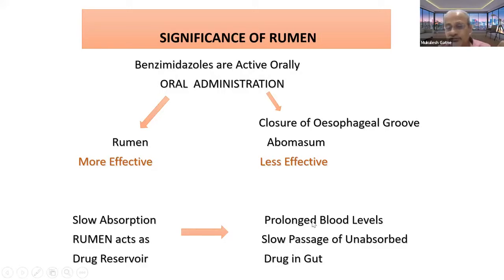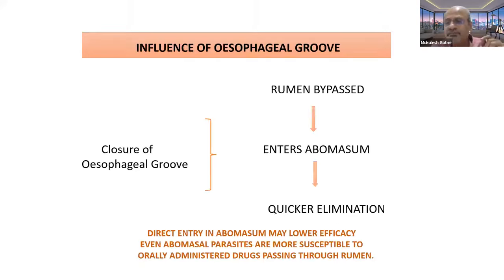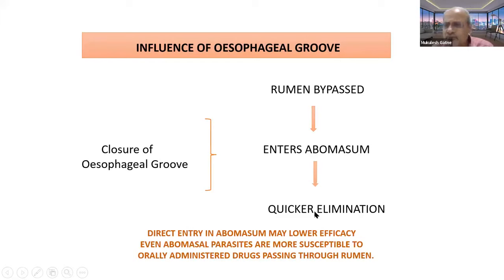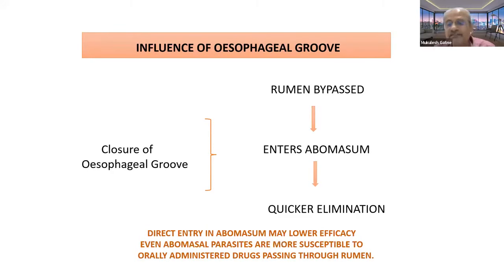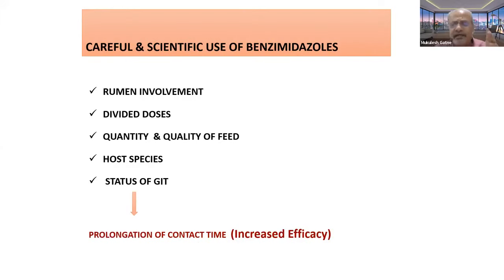Research has shown that even for abomasal parasites, if the drug passes through the rumen reticulum it is more effective. Sometimes during drenching there is closure of the esophageal groove and the drug enters directly into the abomasum — rumen is bypassed, elimination is quicker, absorption is for less period, and contact time and efficacy reduce. Direct entry into the abomasum may lower the efficacy even for abomasal parasites. Even these minute manipulations in anthelmintic administration can delay the development of anthelmintic resistance.